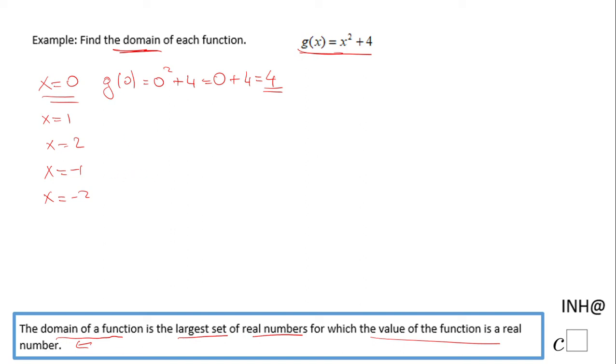So looking at just these couple of examples, you should realize that the domain of this function is any real number. Any real number can be plugged in. Another way to say it is all real numbers. Another way to state this is by writing the interval notation, which is negative infinity to positive infinity—all real numbers.